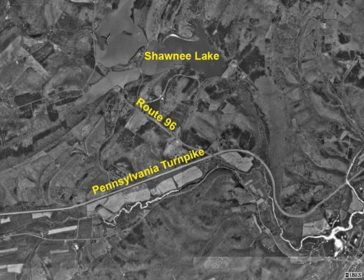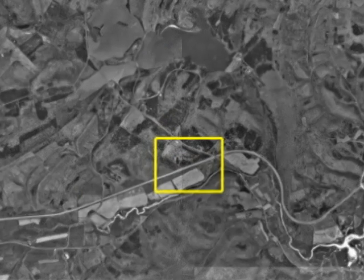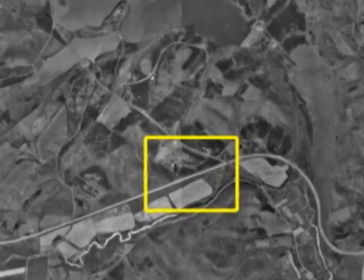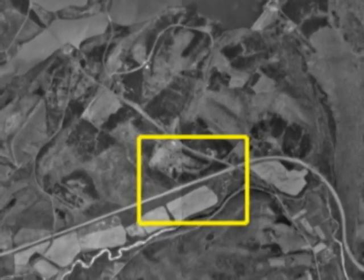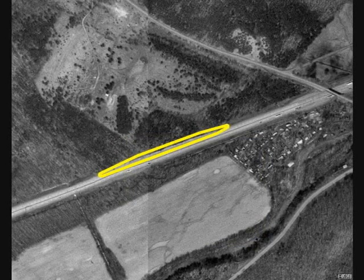Also visible is the Raystown branch of the Juniata River, south of and parallel with the Turnpike. The outcrop is here, and we will zoom in. Here's the location of the road cut.